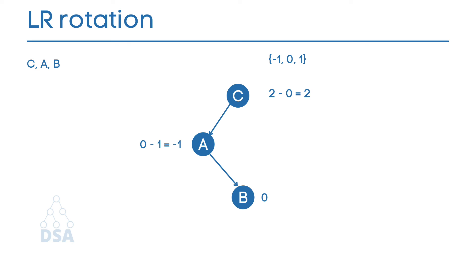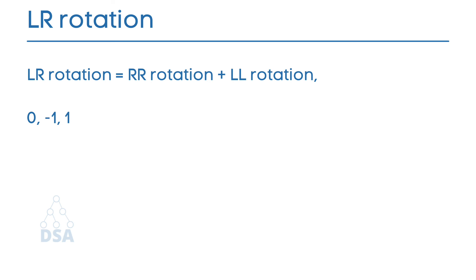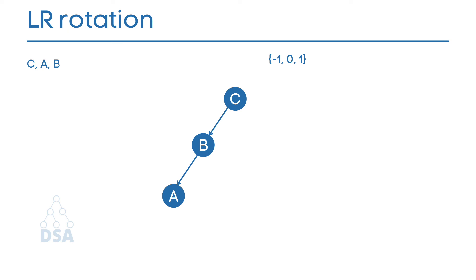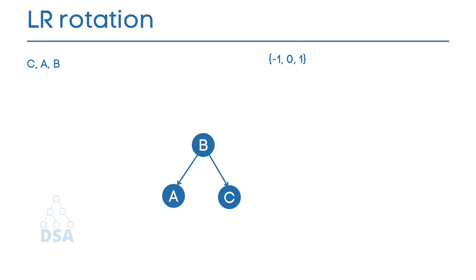To perform LR rotation (RR + LL): first, RR rotation is applied in an anti-clockwise direction on the subtree, and then LL rotation is applied in a clockwise direction on B. After the first step, C remains the root but its balance factor is still 2, so the tree is not yet balanced. We then perform LL rotation on the full tree: B becomes the root node, A becomes the left child, and C becomes the right child. The balance factor of each node becomes 0, so the tree is now balanced.